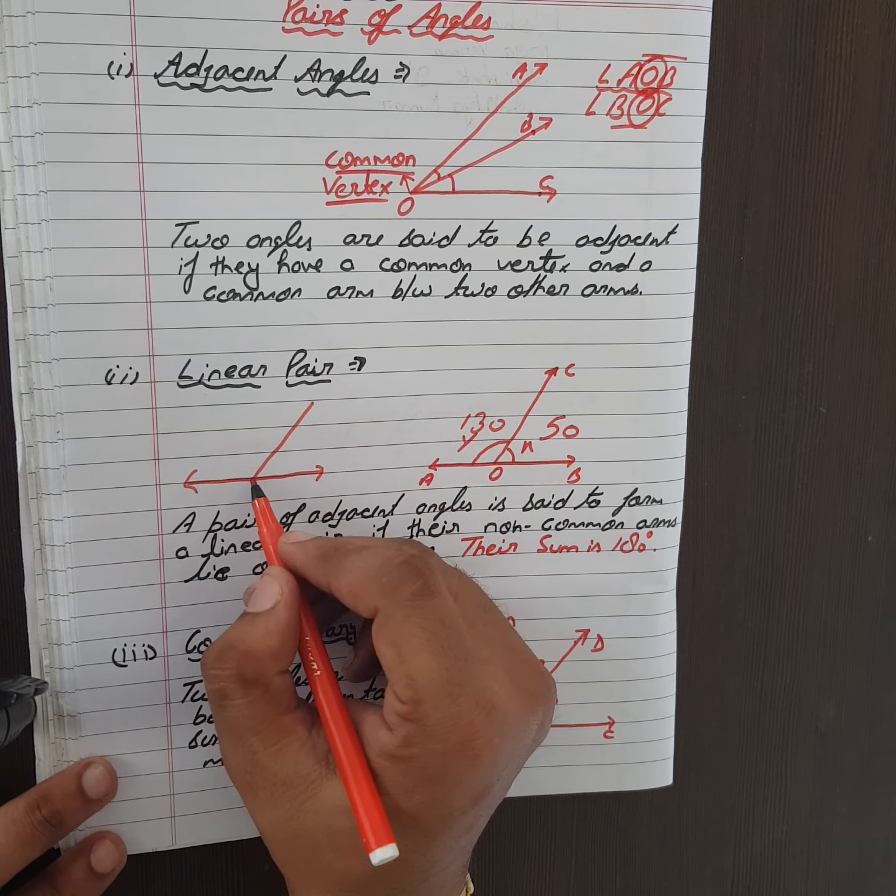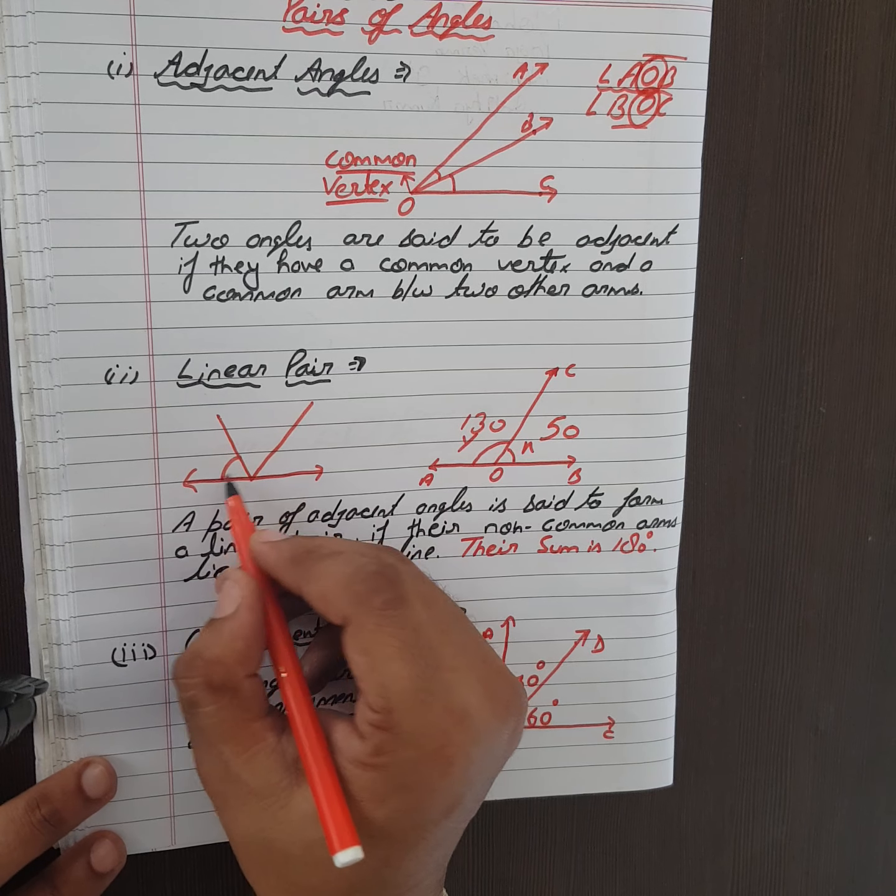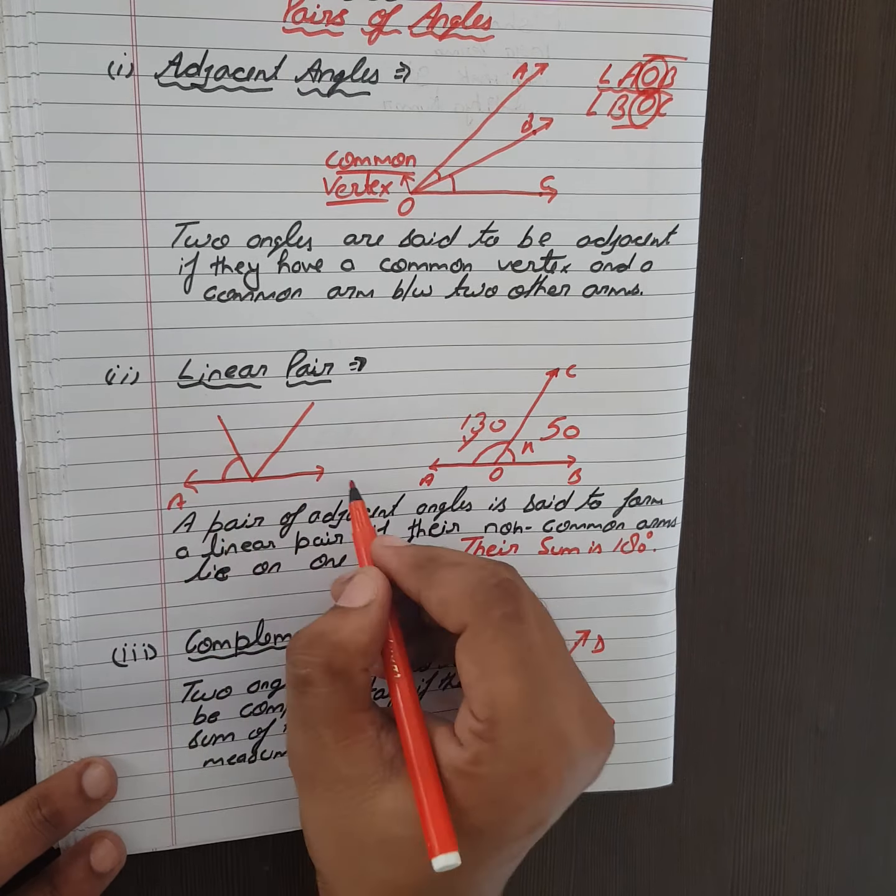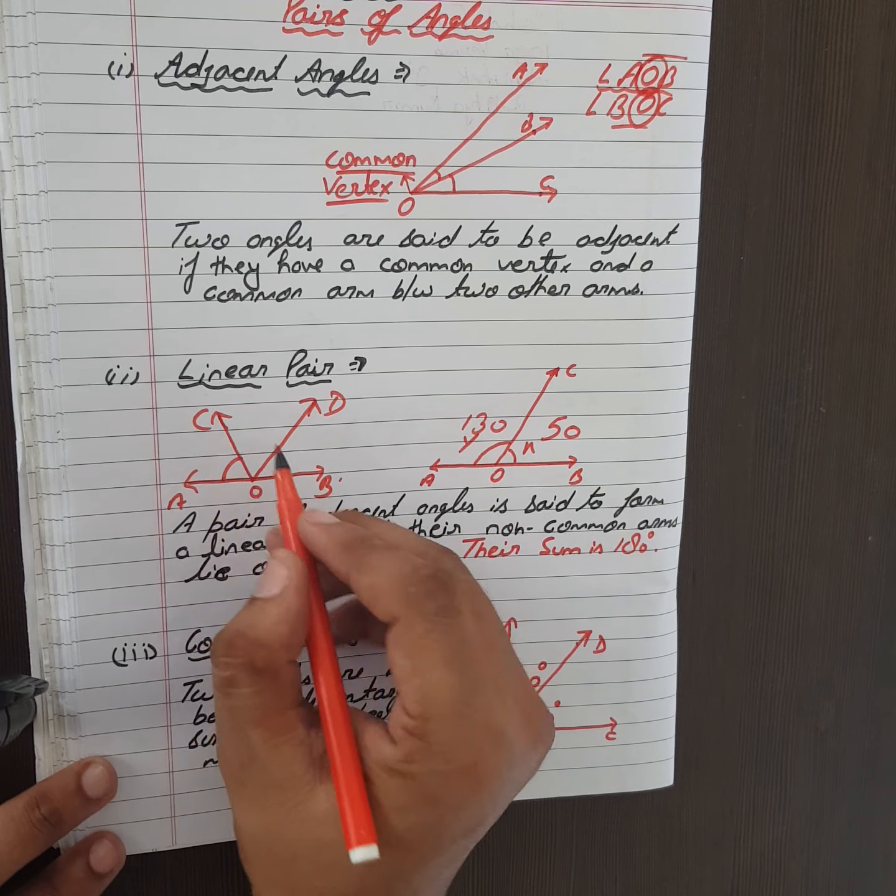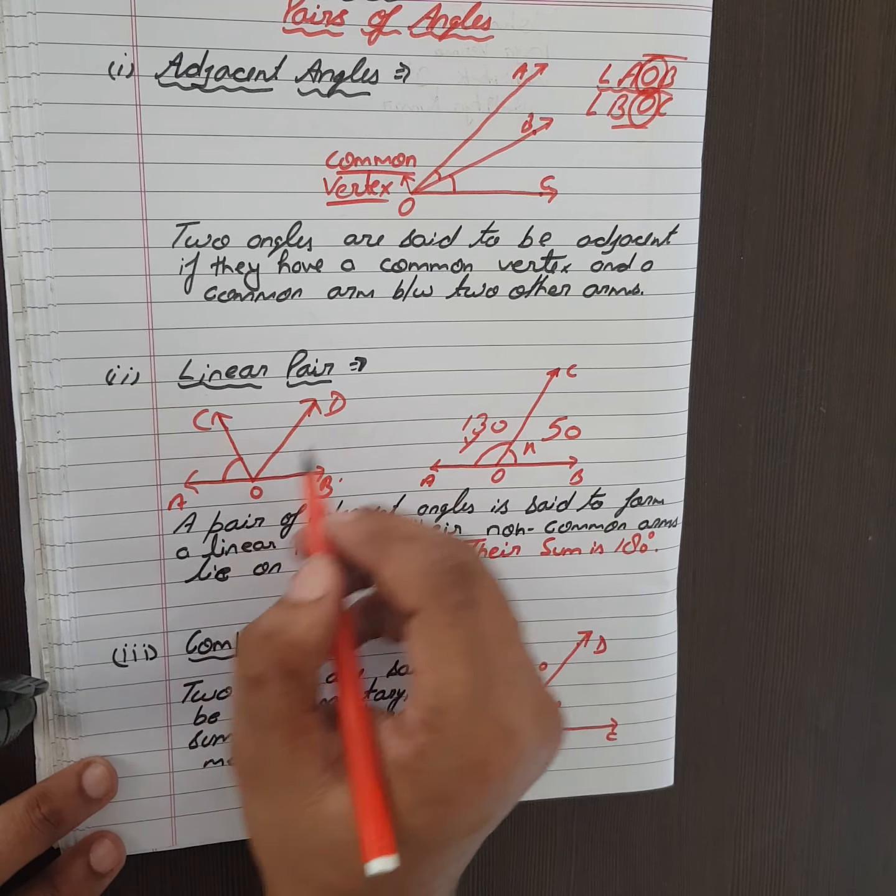Good morning, dear students. Today we are going to start Chapter 6 of Mathematics: Understanding Shapes. First of all, we will discuss pairs of angles, which are one of the most important points.